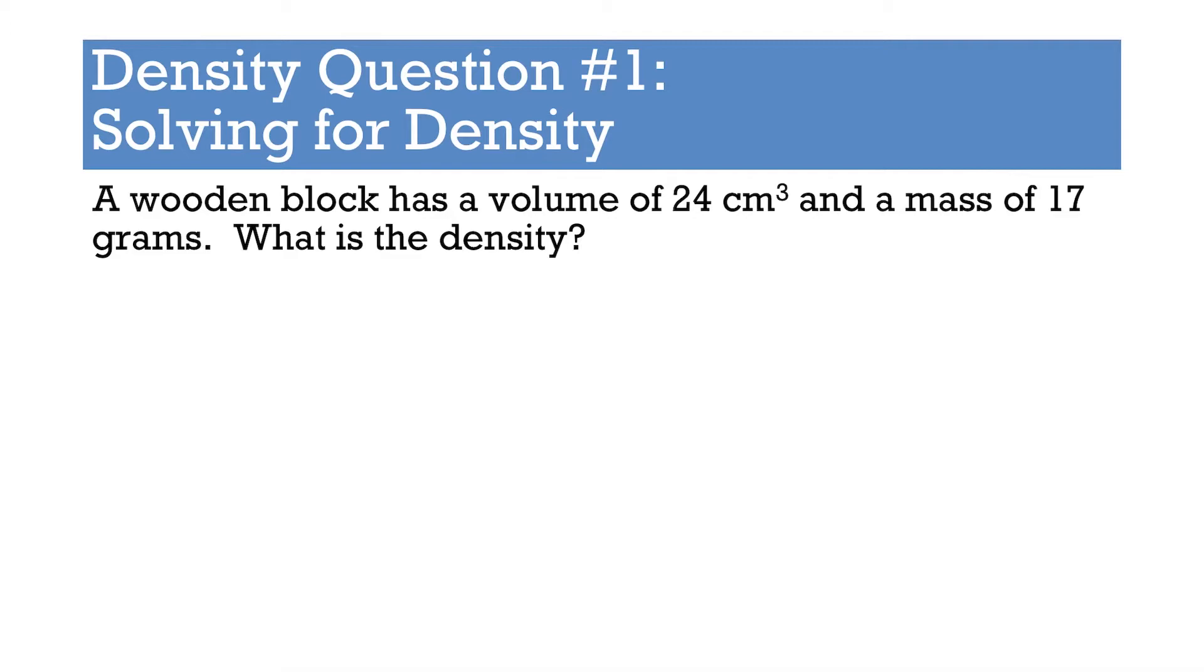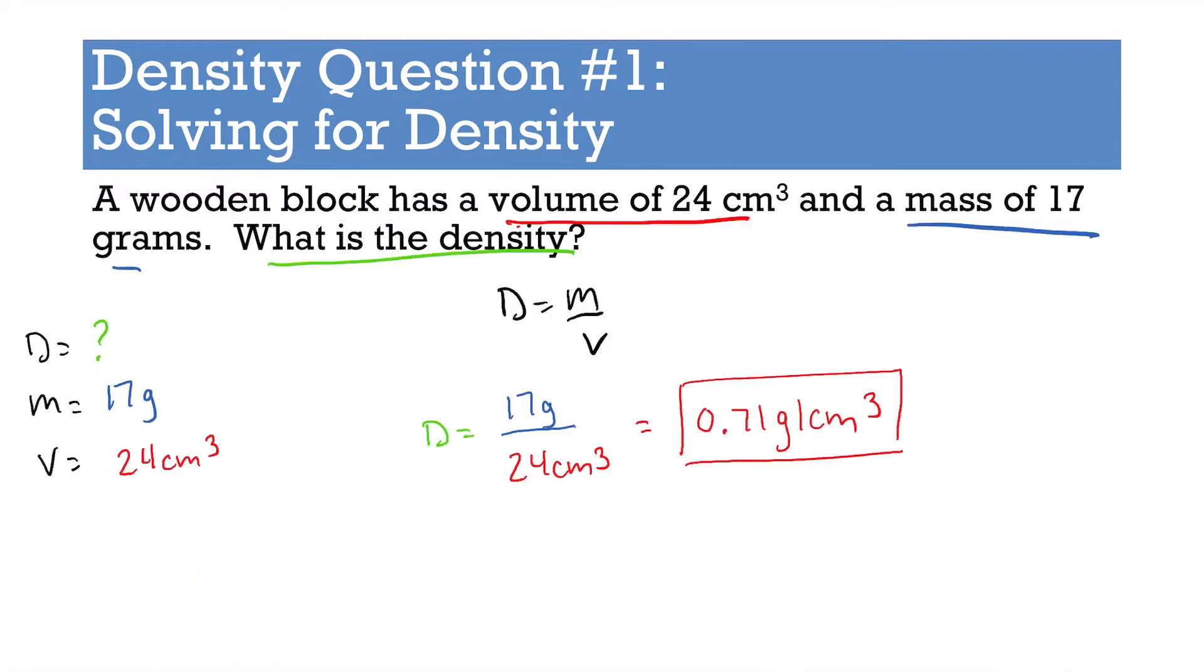Okay, solving for density. Again, we're going to go through these pretty quickly because density should be a review. A wooden block has a volume of 24 cm³ and a mass of 17 grams. What is the density? I can start you out by saying density formula is D = m/V. Density is what we're looking for. Mass is 17 grams and our volume is 24 cm³. If we follow everything through, we plug in our values. We should get D = 17 g divided by 24 cm³ and we get 0.71 g/cm³ as our density. Now would this float in water?